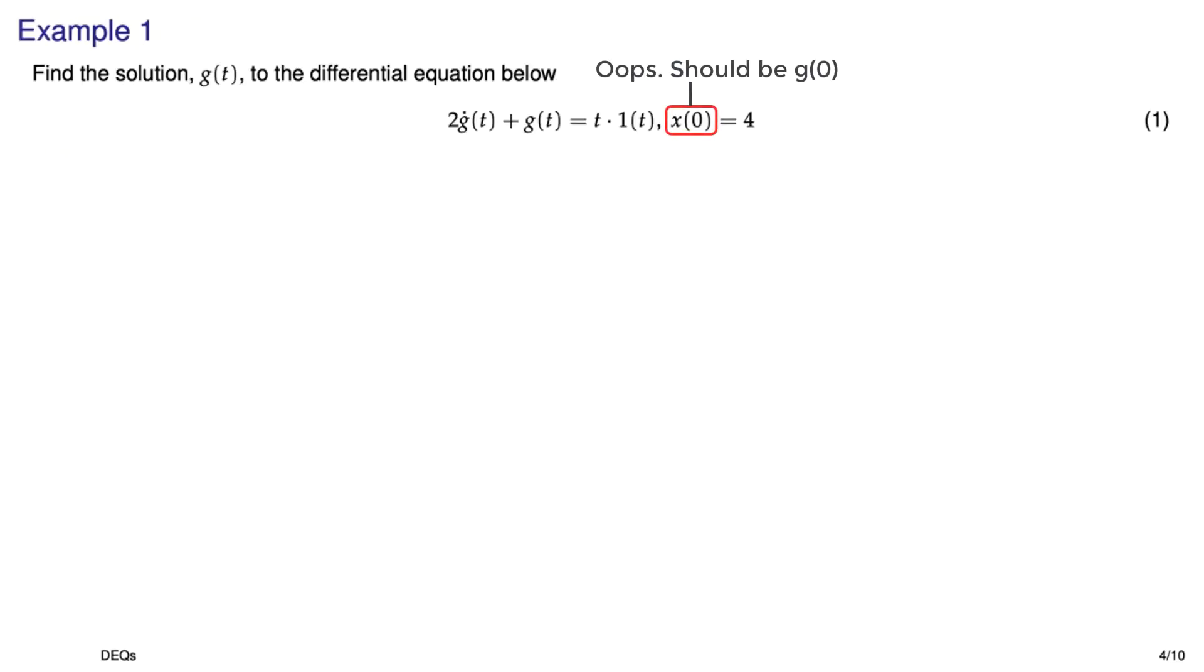Here's the first example. It's just a first-order differential equation where the input is a ramp. So we would expect that the output or the response, g of t, should look ramp-like, and we'll see if that's what we get. There's the input, beautiful looking thing, has a slope of 1, and now let's start going through the steps.